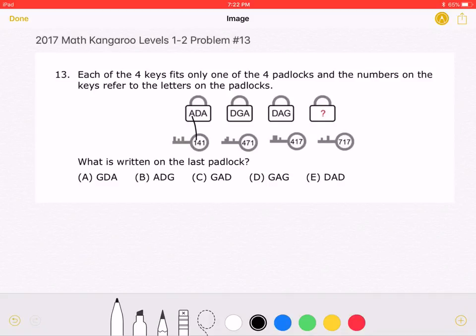A corresponds to the 1, D with the 4, and that A with that 1. Therefore, we know that A must be 1, and D must be 4.